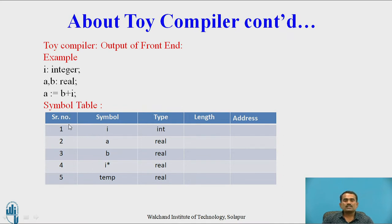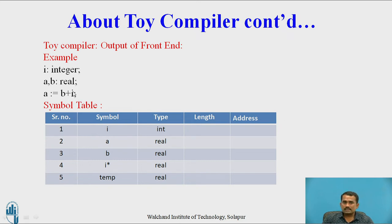Based on this, we have to prepare the symbol table. In the given statement, the symbols we consider are: first I, then A, then B. Now, before performing any task, we note that these variables are of different types — two are real and one is integer. For that, we have to convert the integer variable to a real variable. We convert I to I-star. In the table, I-star indicates that I, which was an integer, has been converted to real.